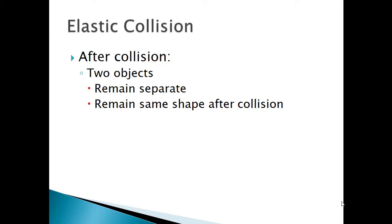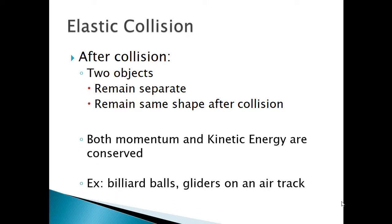In an elastic collision, after the collision the two objects remain separate — if they stick together, it's definitely not elastic. They also remain in the same shape; if something changes shape, it can't be elastic. The key thing is that both momentum and kinetic energy are conserved.